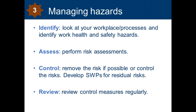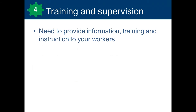The next element in a safety management system is training and supervision. It's your responsibility as a business owner to provide information, training and instruction to your workers to ensure their health and safety at work. You should provide training when a worker starts in the workplace to cover emergency procedures, workplace facilities, first aid, how to report a hazard or other safety issue, how work health and safety is managed in the workplace, and any health and safety procedures and policies required for their work tasks. This might include manuals, safety data sheets, and personal protective equipment or PPE.